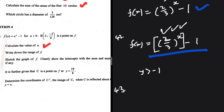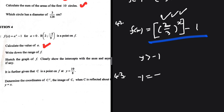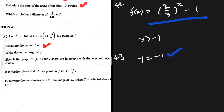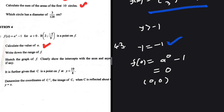For 4.3, sketch the graph of f, clearly showing intercepts and asymptotes. The horizontal asymptote is y = −1, because (2/3)^x can never equal 0, so we never touch that line. There is no vertical asymptote since f(x) is defined for all values of x. For the y-intercept, let x = 0: a^0 − 1 = 1 − 1 = 0. So the graph passes through the origin (0, 0).